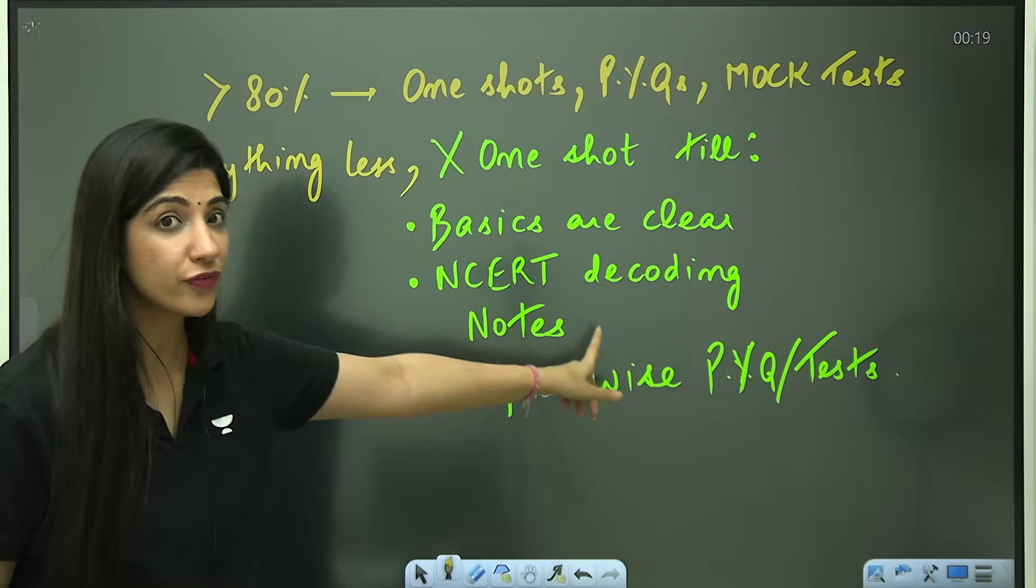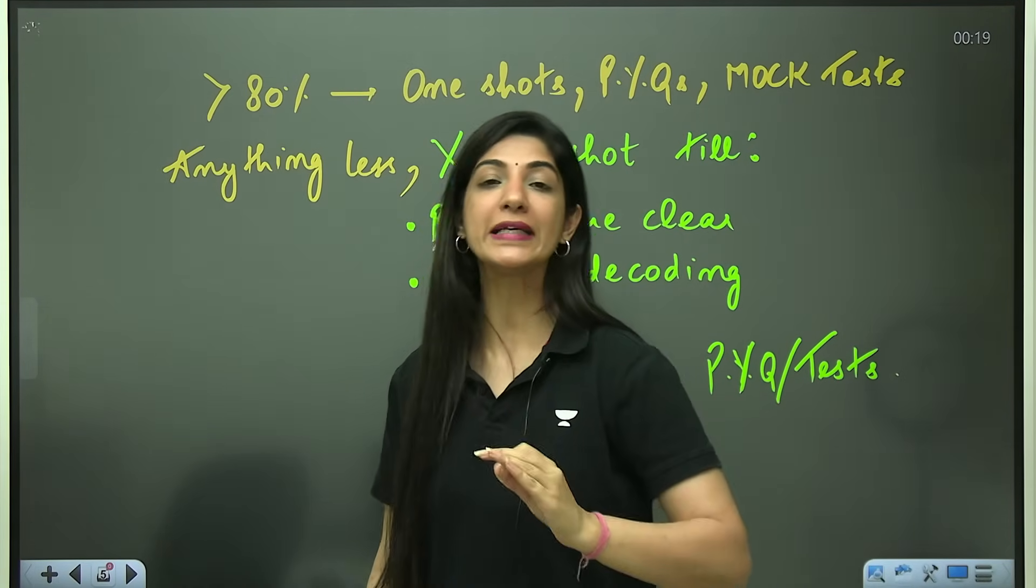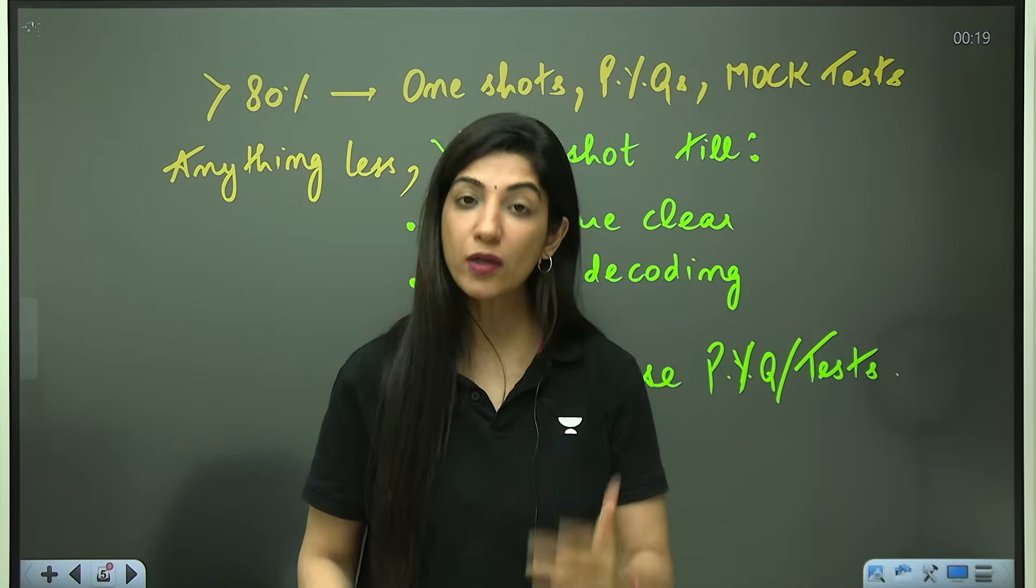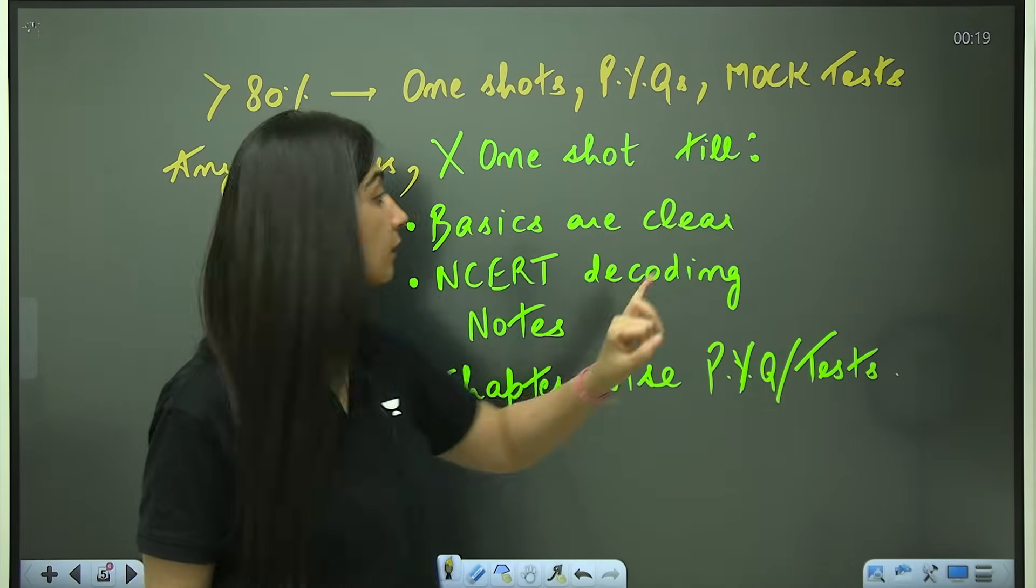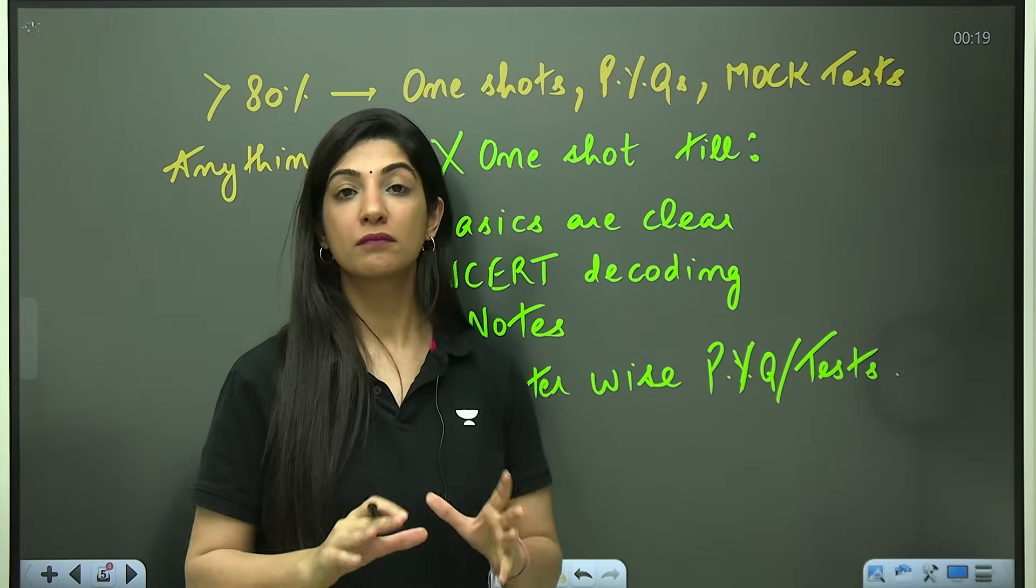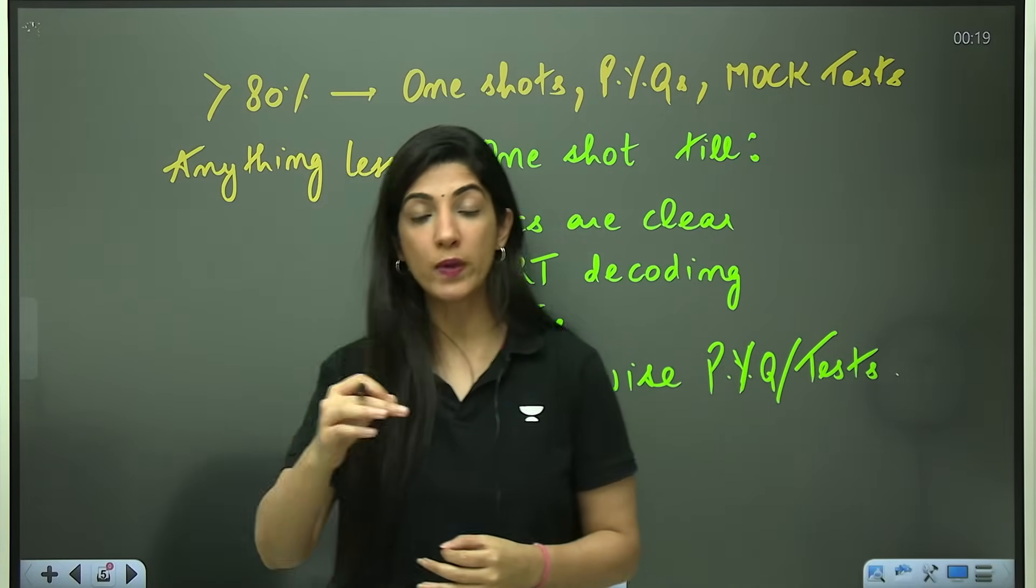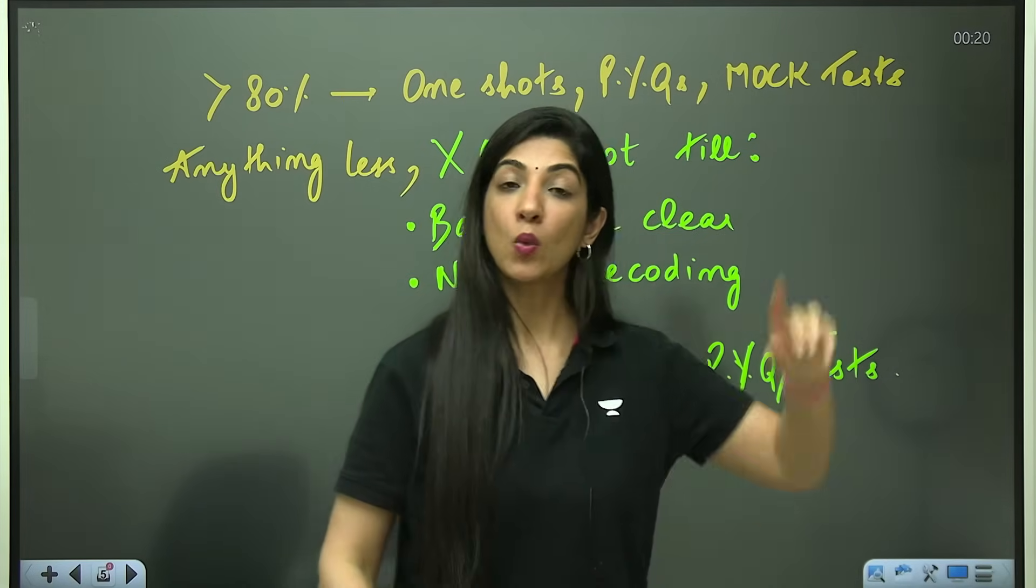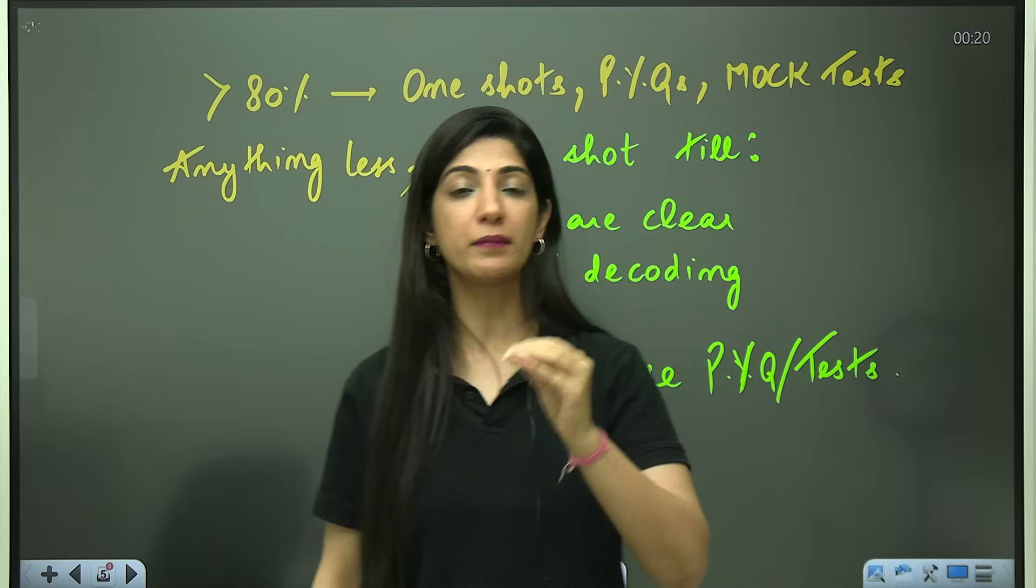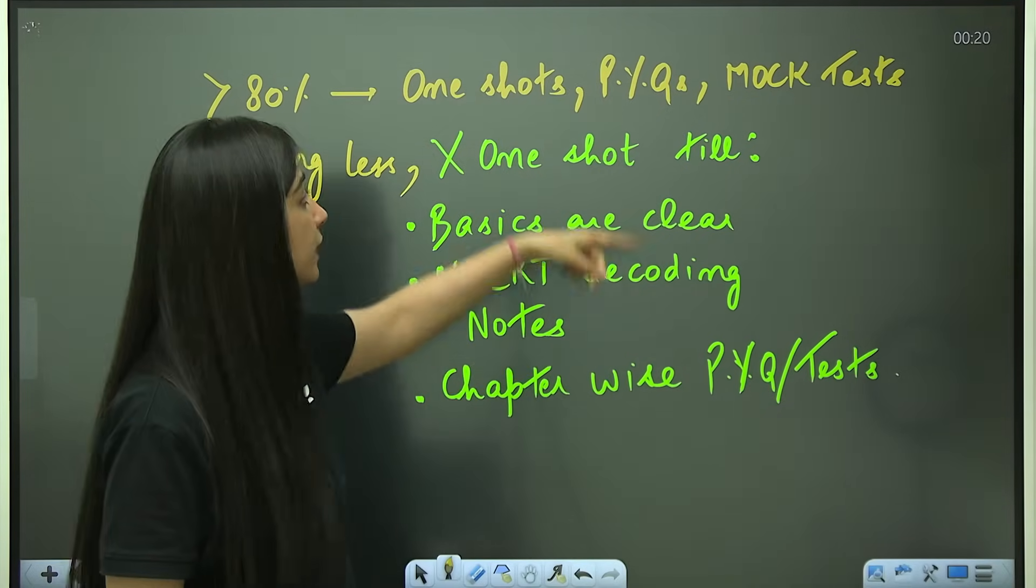That is, your basics are clear - you have attended the basic lecture with your teacher of every subtopic of this chapter. Then only you can assimilate the one-shot. Your NCERT decoding is done with your teacher. You have read NCERT many times of this chapter. You have the notes, either of the teacher or your own notes. You can go back to them while watching the one-shot lecture. And the last one, you have done the PYQs, a minimum of 200 I say, and you've given the test of this particular chapter.